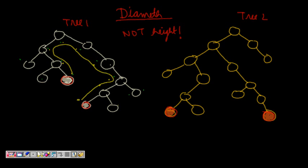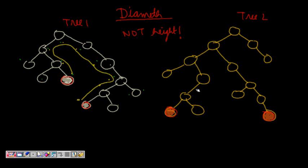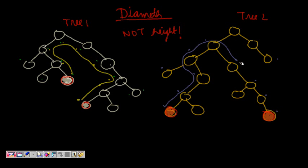Similarly, if I see here — if I choose these two nodes: 1, 2, 3, 4, 5, 6. And then 1, 2, 3, 4, 5, 6, 7, 8, 9. So these are the farthest two leaf nodes, and this is the diameter.